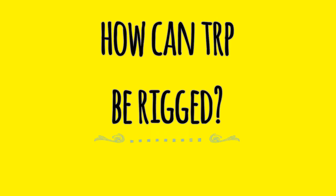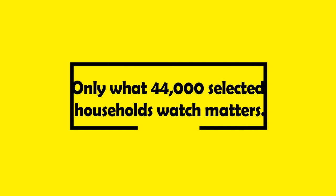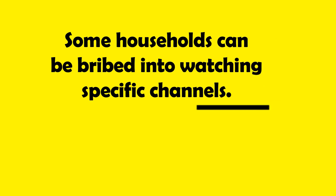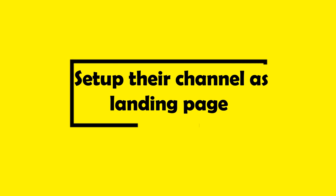How can TRP be rigged? For TRPs, it does not matter what the entire country is watching, but essentially what those 44,000 selected households are watching. If broadcasters can find the households where devices are installed, they can bribe them towards their channels. Another trick is to ask cable operators to ensure that their channel is available as the landing page — that is, the channel which is playing when the TV is switched on.